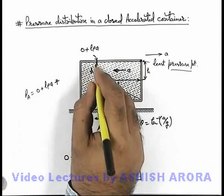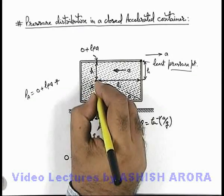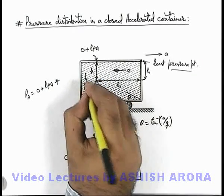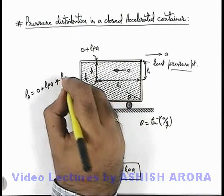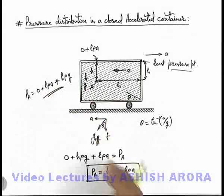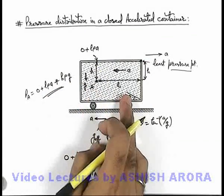And now if we know the pressure at this point, pressure at point a can be written as this pressure zero plus l rho ay plus, due to a vertical depth h, pressure will only vary due to gravity g, so it will be h rho g. We can see the same result we are getting no matter which path we are following.